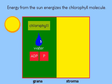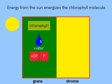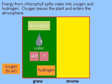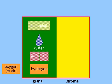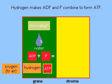When sunlight lands on the leaves, the light absorbed by the chlorophyll leads to the creation of high energy molecules in the stroma. These molecules split water into its elements of hydrogen and oxygen, releasing oxygen into the air. The hydrogen makes ADP and phosphate combine to form ATP.